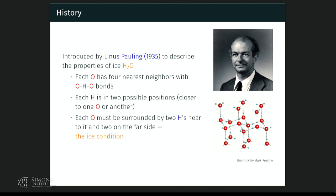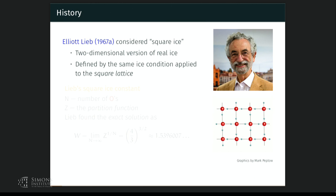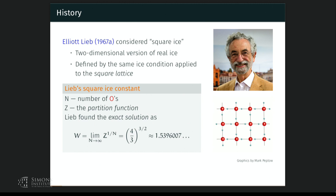Professor Elie Lieb solved the square ice, which is a two-dimensional version of real ice, defined by the same ice condition but applied to the square lattice. Here is a valid state in the six vertex model — for each red vertex as an oxygen, there are two hydrogens near to it and two on the far side. One very important discovery is the following: if we denote the number of oxygens by N and Z to be the partition function, then the exact solution — the partition function per vertex as N goes to infinity — equals (4/3)^(3/2). This is called the Lieb square ice constant.